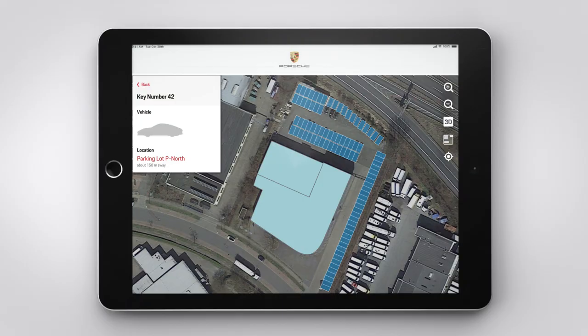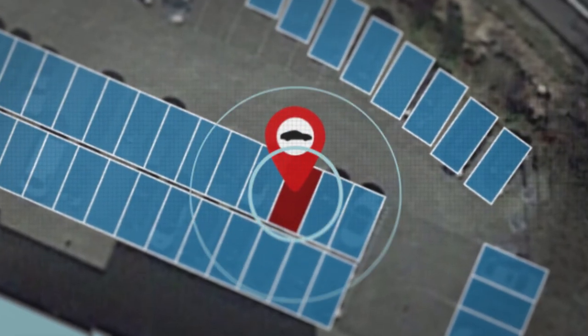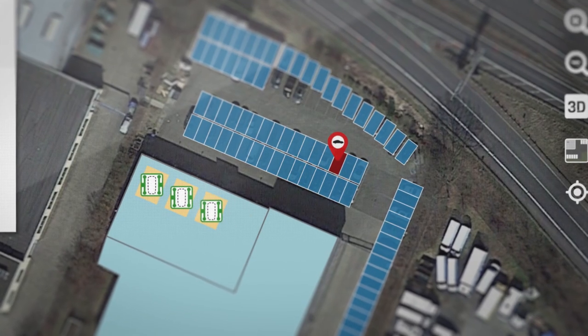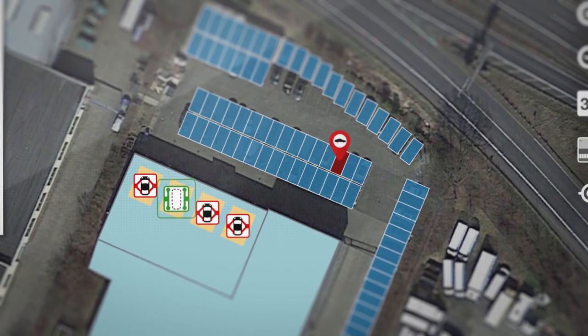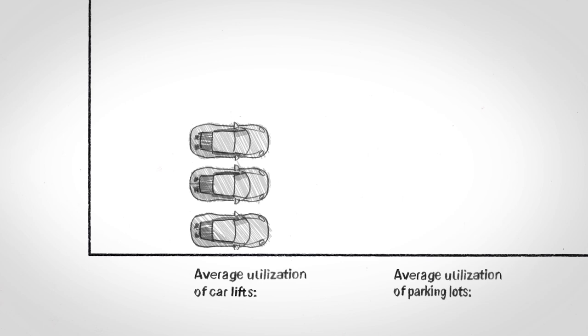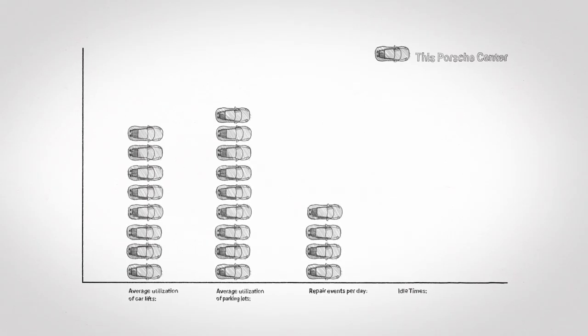The app can display the vehicle's position, among other things. It can also display, for example, unoccupied car lifts. It can read out data on the capacity of the car lifts, the car wash, and much more.